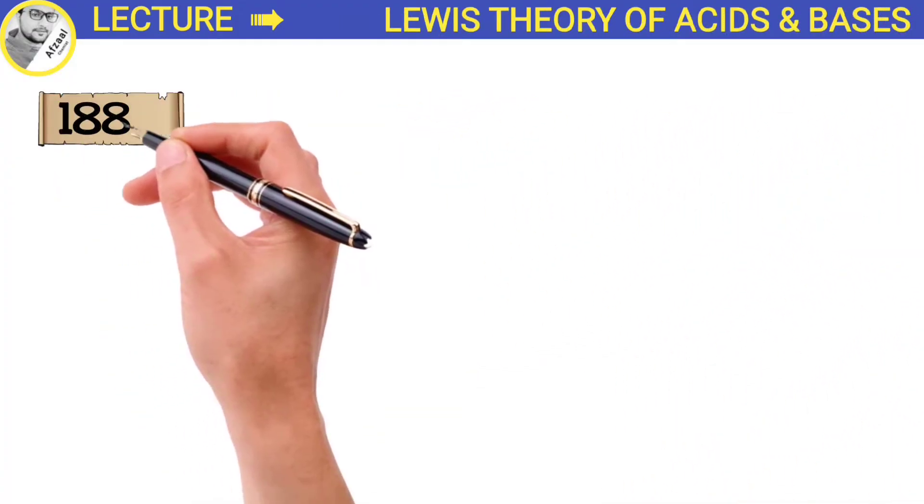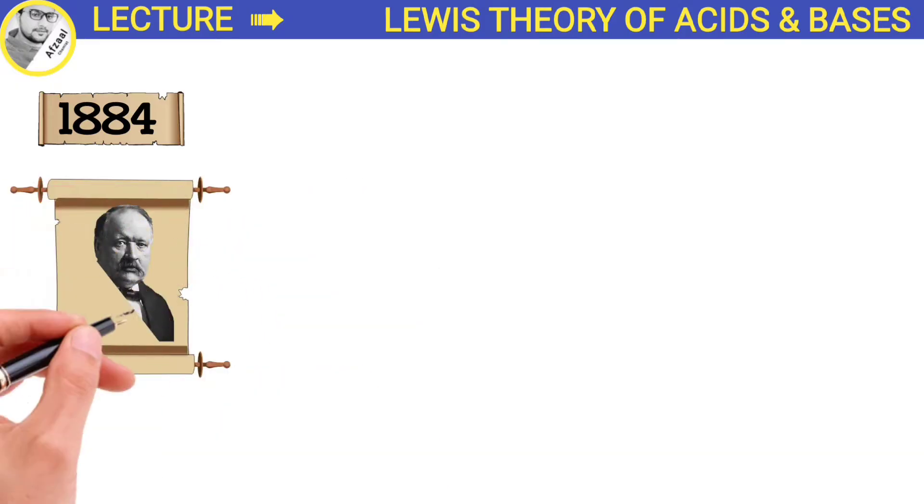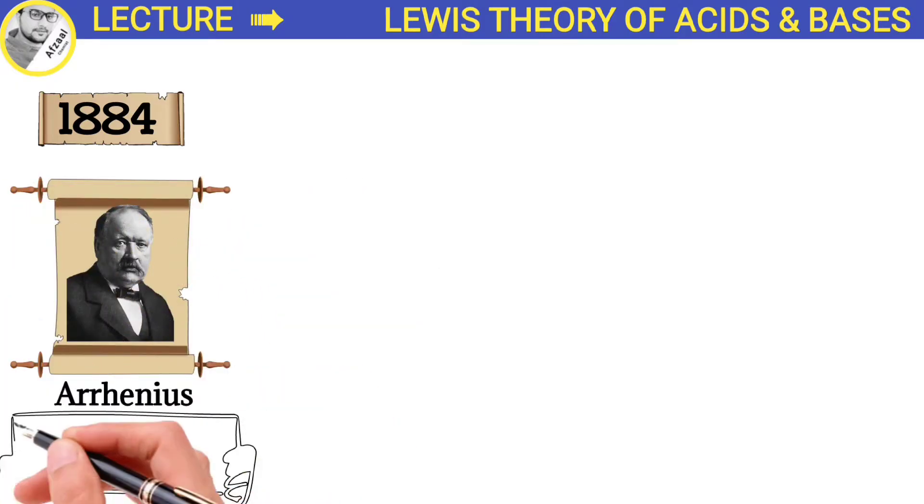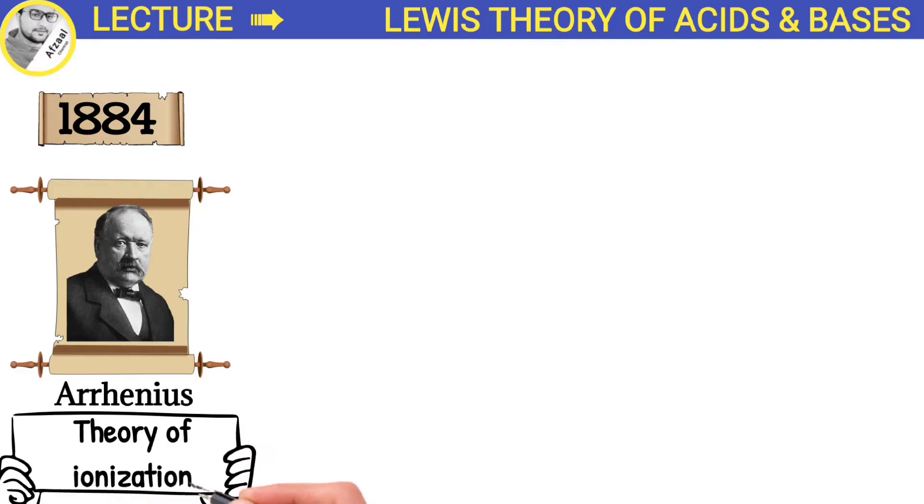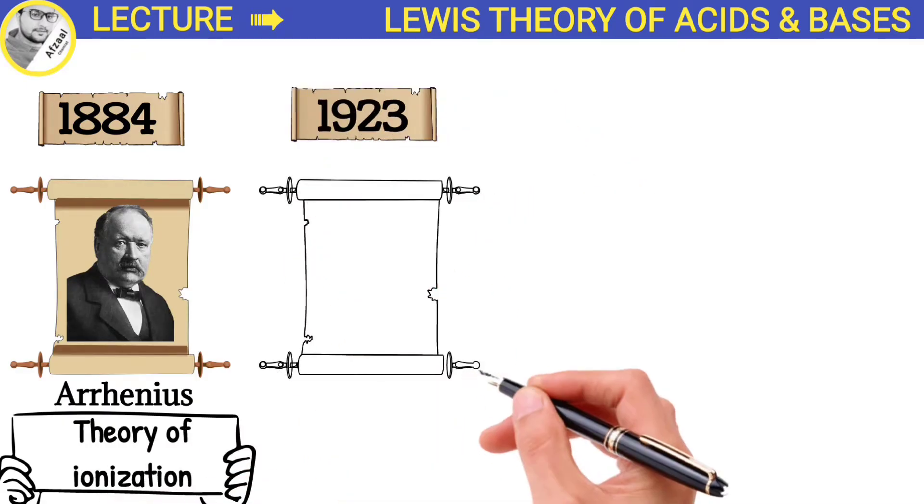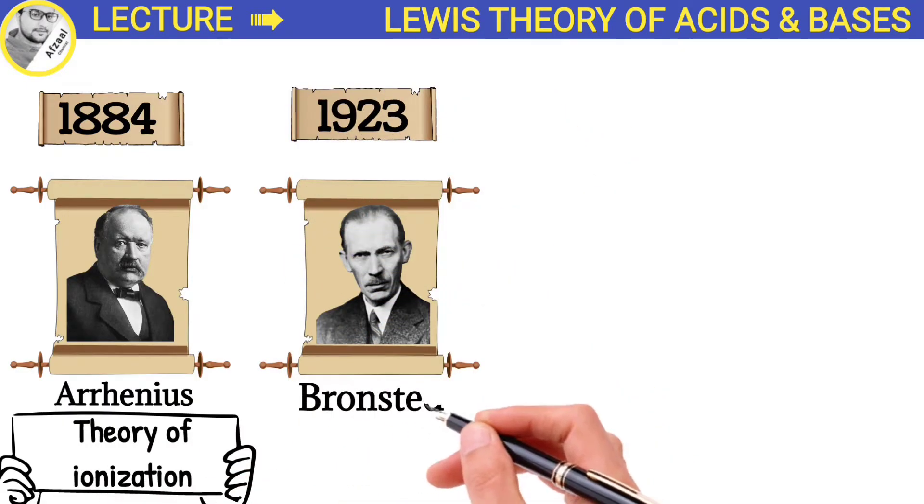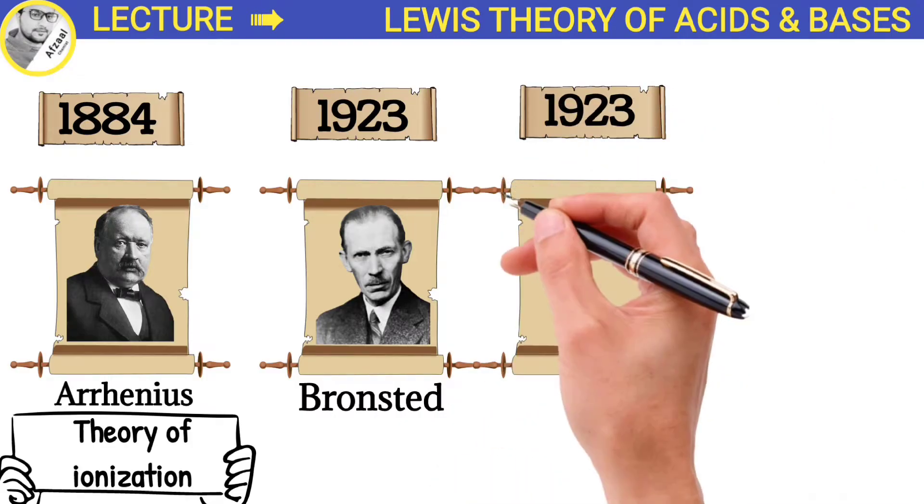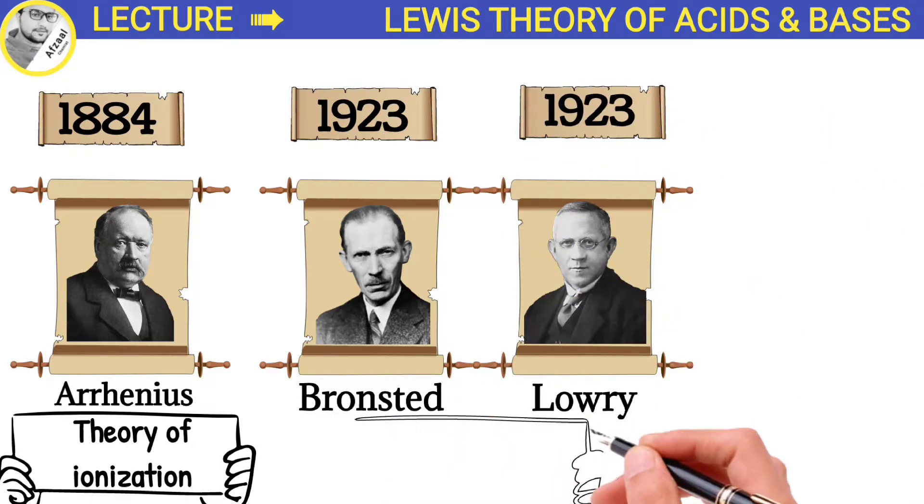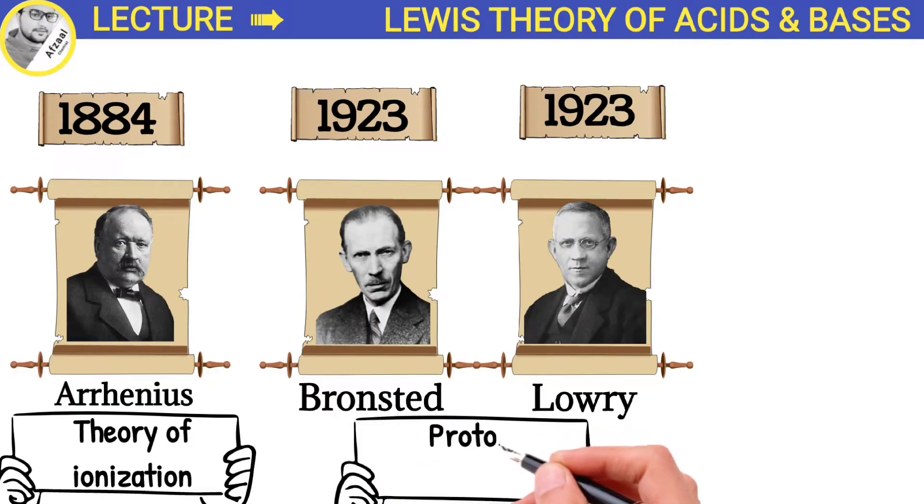In 1884, Swedish chemist Svante Arrhenius proposed the concept of acid and base based on the theory of ionization. In 1923, the Danish chemist Bronsted and the English chemist Lowry independently presented their theories of acids and bases on the basis of proton transfer.